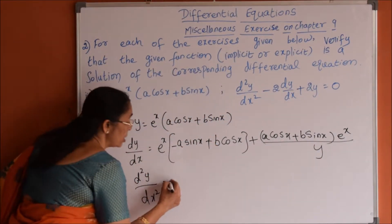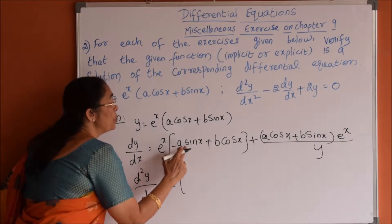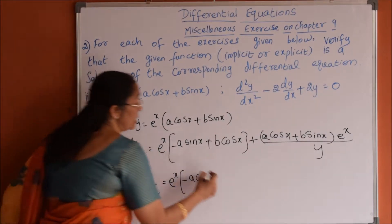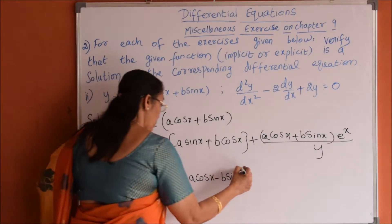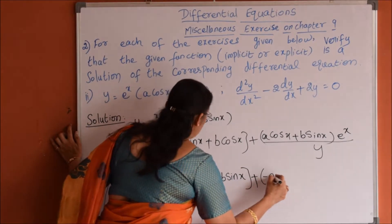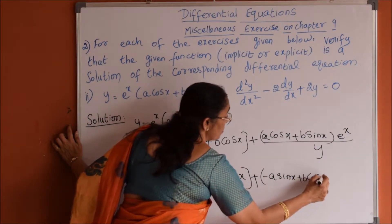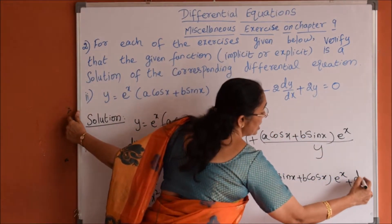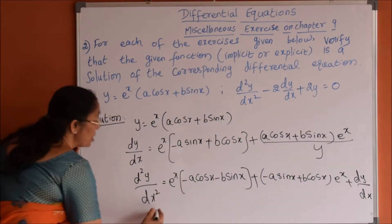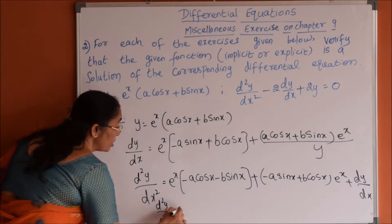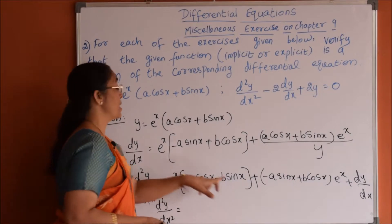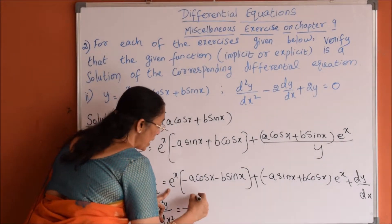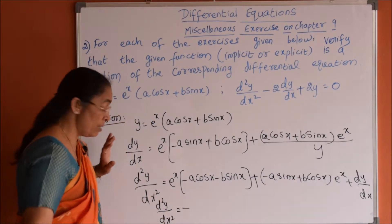For the second differentiation, again applying product rule: e power x into differentiation of minus a sin x is minus a cos x, and differentiation of b cos x is minus b sin x. Plus b cos x into differentiation of e power x is e power x, and the y term differentiation is dy by dx. So d square y by dx square: the first part gives e power x into minus a cos x minus b sin x, taking negative sign outside gives minus e power x into a cos x plus b sin x, which is minus y. So the first term is minus y.